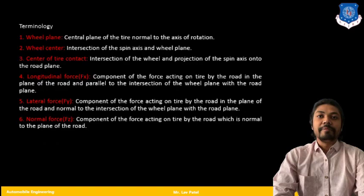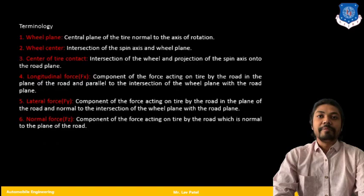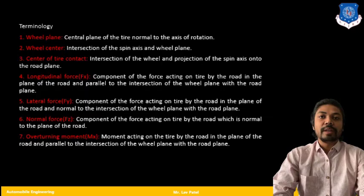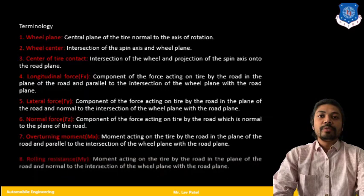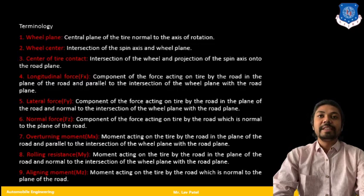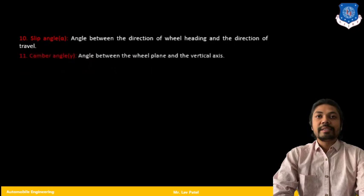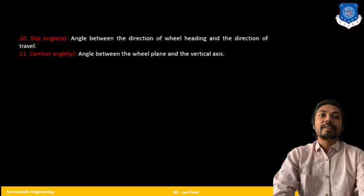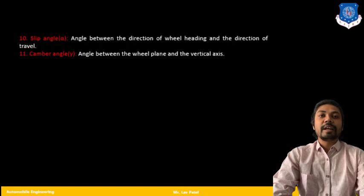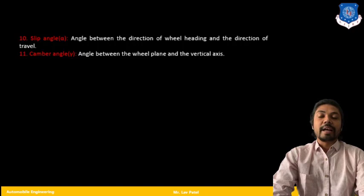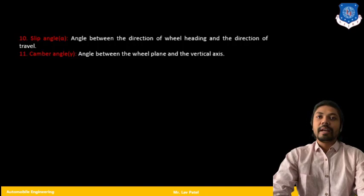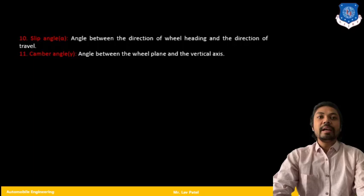These are the basic terminology and definitions that can be asked. Last two are slip angle, that is alpha. That is the angle between the direction of wheel heading and the direction of travel. Here you can see these two are different directions. First direction we can call wheel heading and the second direction is the direction of travel, and the angle between them is called slip angle. And the final is the camber angle gamma. That is the angle between the wheel plane and the vertical axis. That we can call gamma.